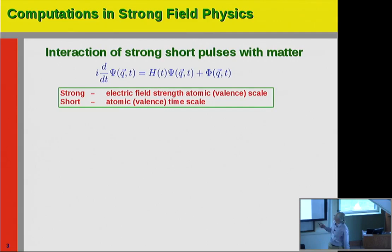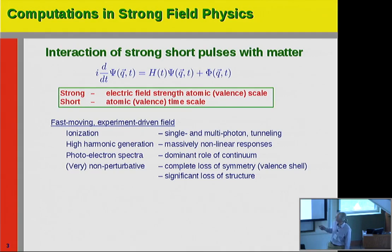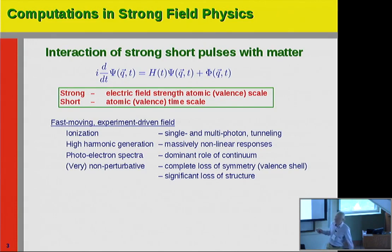Short pulses means they are short, comparable on the time scale to the typical internal valence time scales. The interaction is usually dipole, but not necessarily. This is an experiment-driven field, and the things people look at are ionization — coming in various flavors: single photon, which is relatively easy, basically perturbation theory; multi-photon tunneling. There is high harmonic generation, which is obviously a massively non-linear process. There are photoelectron spectra, and it's clear you cannot escape continua. It's very often rather non-perturbative — really off — meaning complete loss of symmetry in the valence shell and sometimes significant loss of structure.